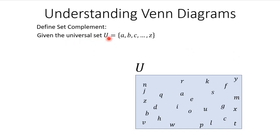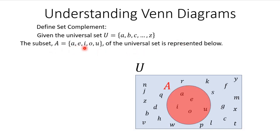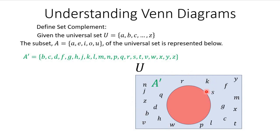Here, the universal set is all the lowercase letters of the alphabet. The subset A is the set of all vowels: {A, E, I, O, U}. So A's complement consists of everything outside of A — all the letters of the alphabet excluding the vowels A, E, I, O, U. That would be all the consonants, and that is the complement of set A.